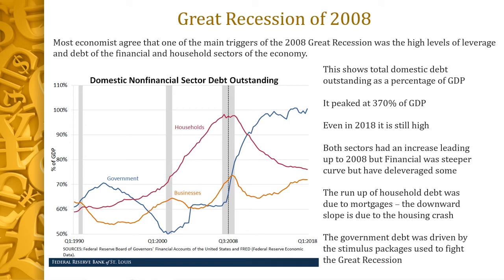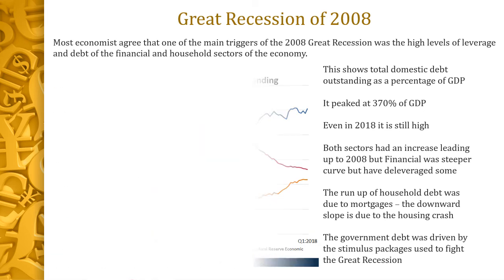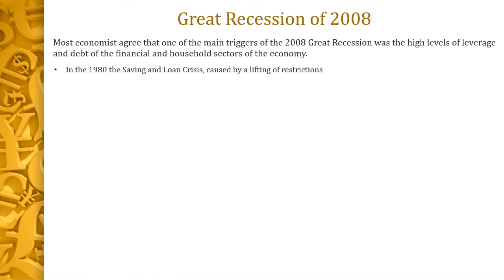Let's talk about the timeline of what occurred. This actually starts back in 1980. In the 1980s we had something called the savings and loan crisis. This was caused by the lifting of certain restrictions. Regional banks held mortgages literally for 30 years, but when the restrictions were lifted, people wanted more from these banks than they could give. This changed how mortgages were basically given and collected, because the regional banks really couldn't make a living anymore by holding these mortgages.